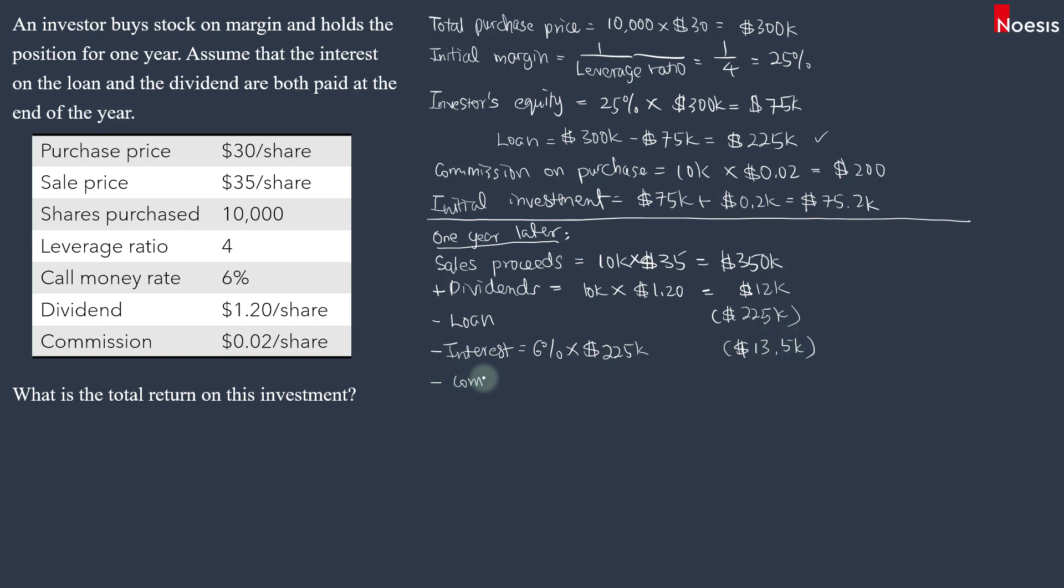And then we'll minus the commission on sales. The commission on sales is also $0.02 multiplied by $10,000. So that will be another $200 that we'll minus off. Since you're selling, this is what you receive. Then for commission, you will have to minus. But when we did it initially, these two are investments. These are outflows. So that's why we have to plus.